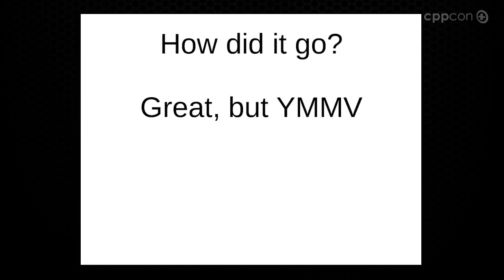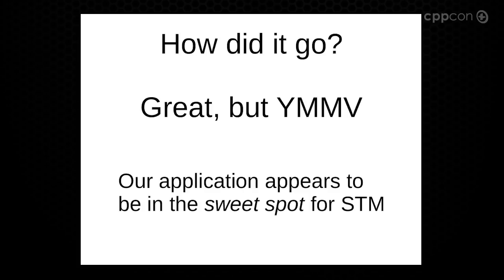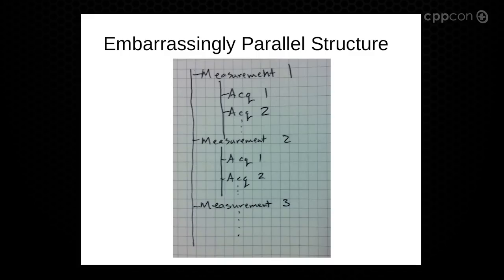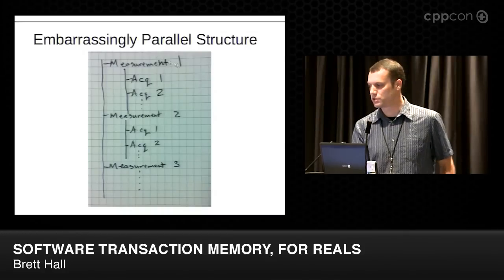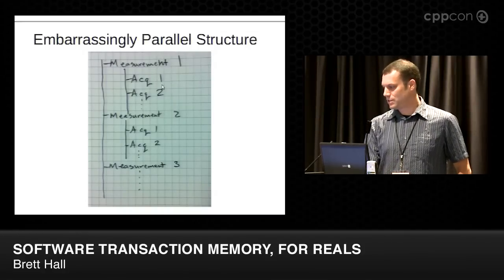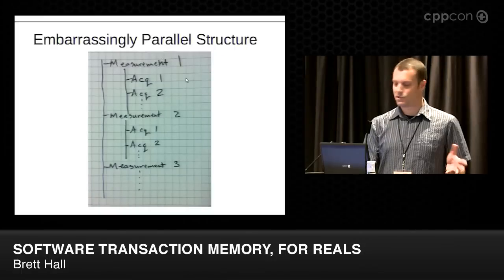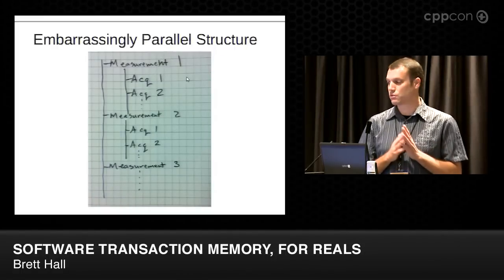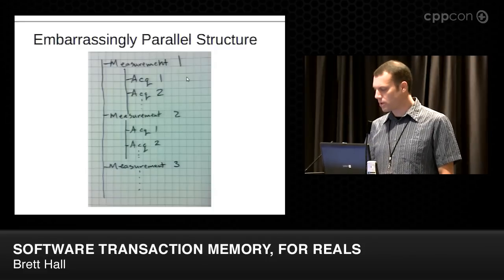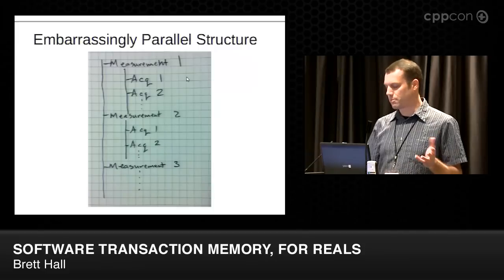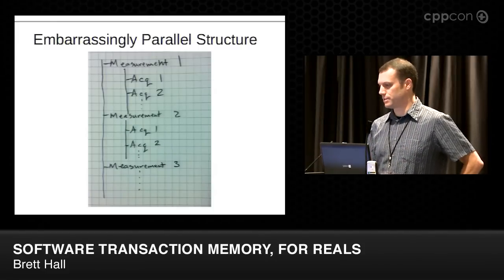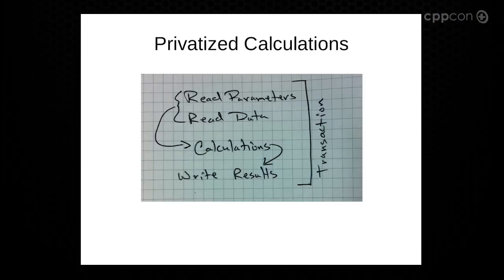So how did it go? Great, but your mileage may vary. I think our application is in the sweet spot for software transactional memory. First off, our data has an embarrassingly parallel structure. When you're collecting data, you get these acquisition objects where the real data is, and when doing calculations, all these acquisitions have isolated calculations that are independent of each other. The measurements are independent of each other. It's really easy to fan all this out onto different processors, which means we aren't doing a lot of tight synchronization between different threads doing these calculations.